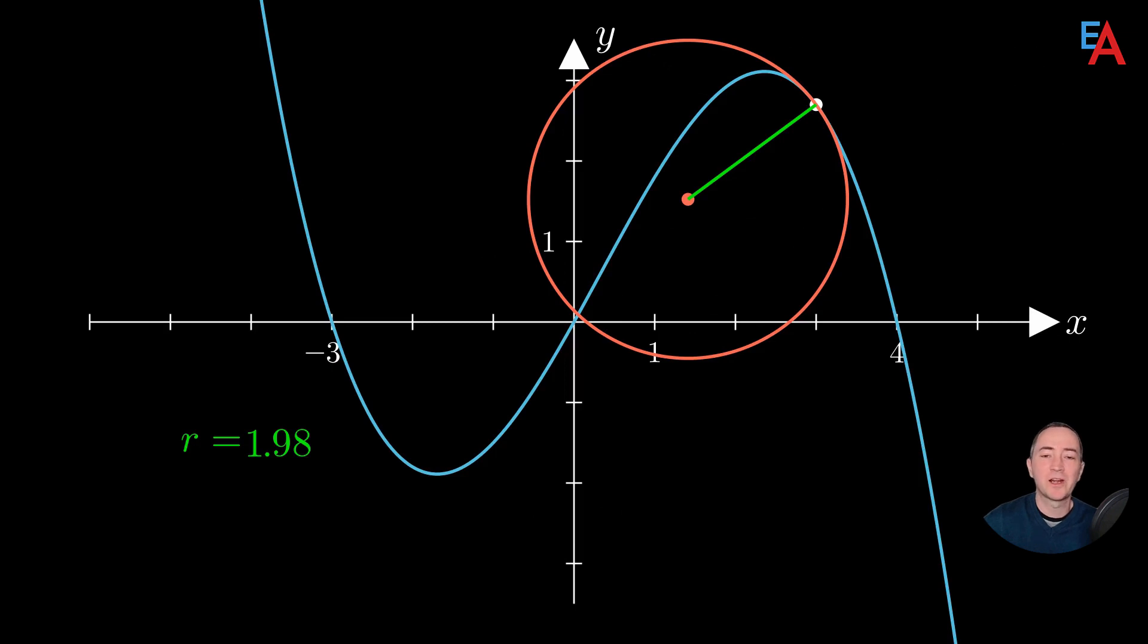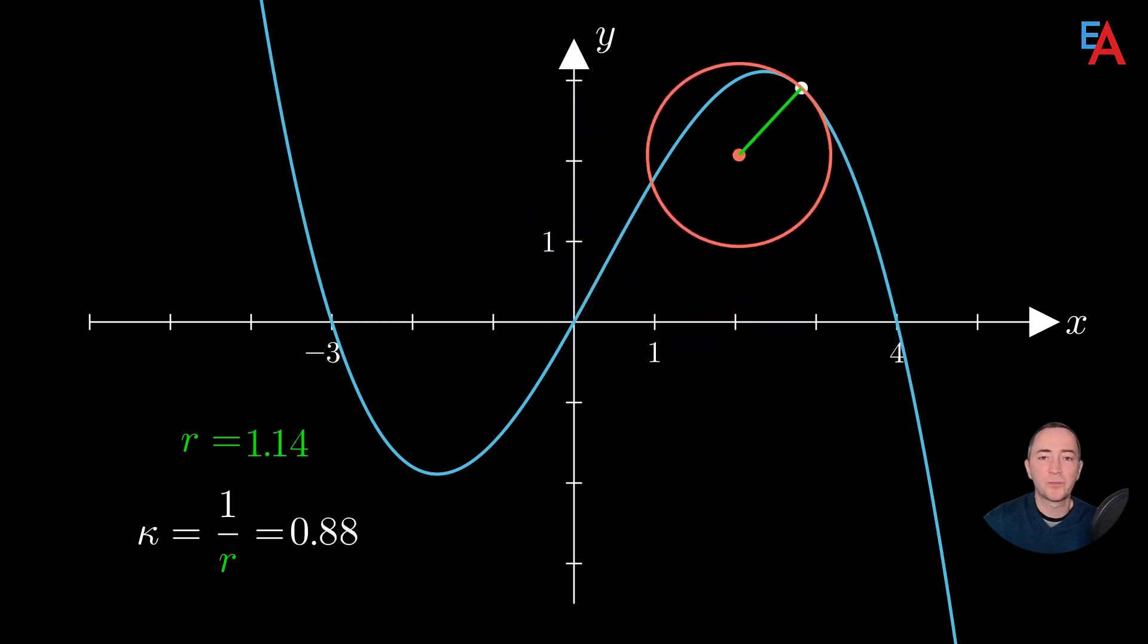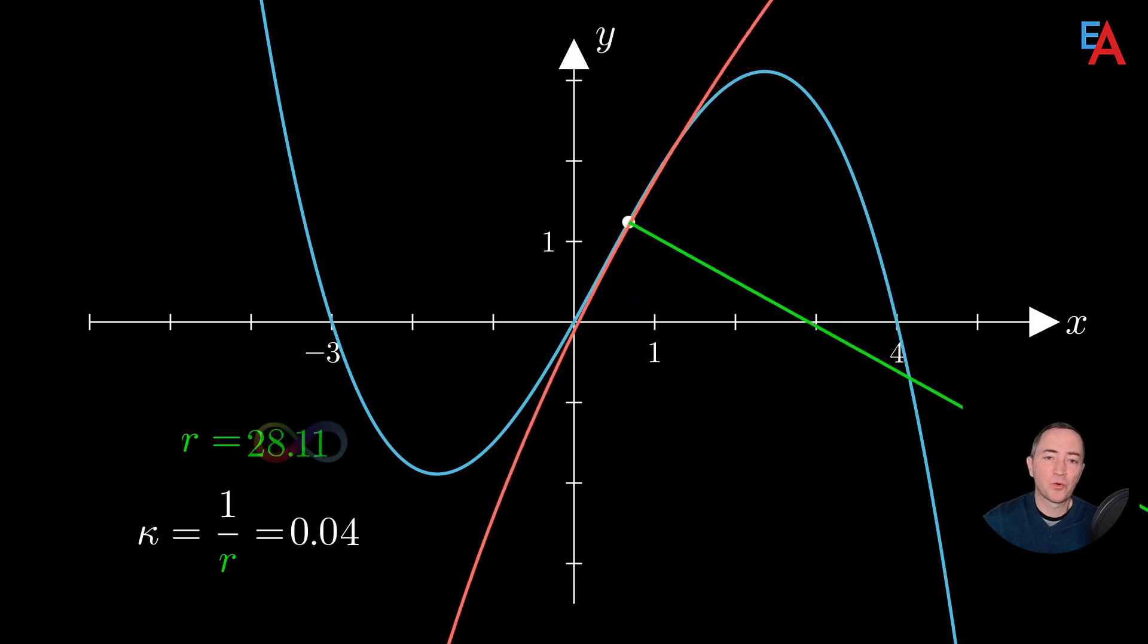We define the curvature of a curve simply as the inverse of the radius of this circle. Let's see how it changes as we travel around this polynomial. Passes through zero.